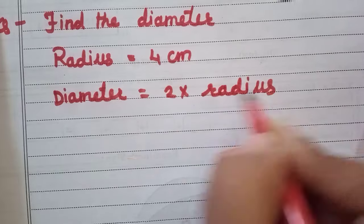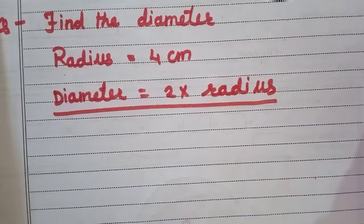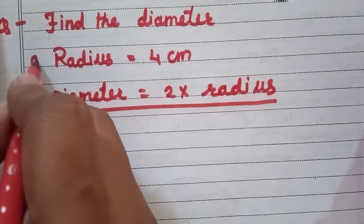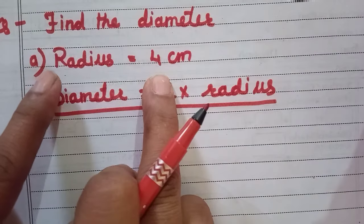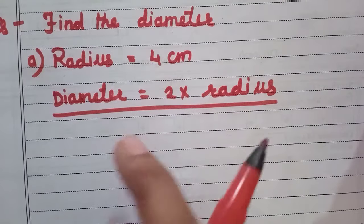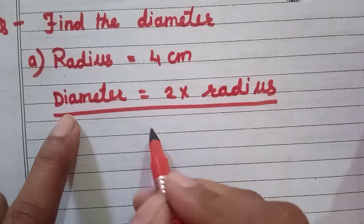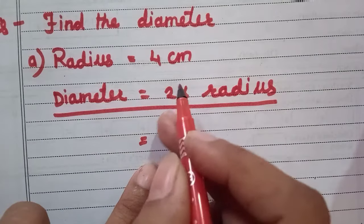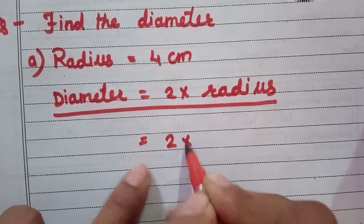This is our first question: radius is 4 centimeter. Radius is given and we have to find out the diameter. Now put the value in the formula: 2 multiply by radius.